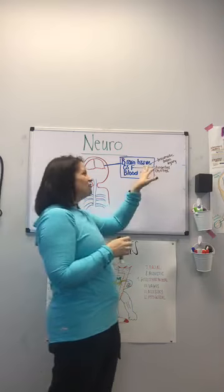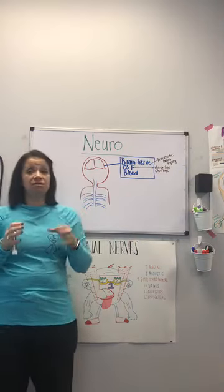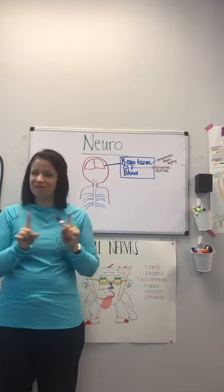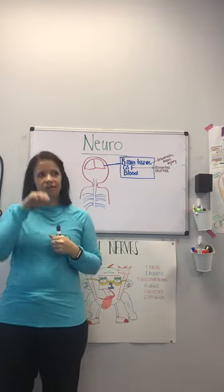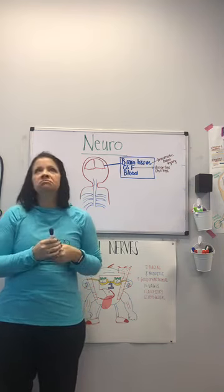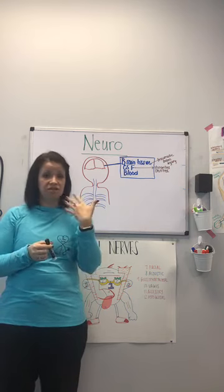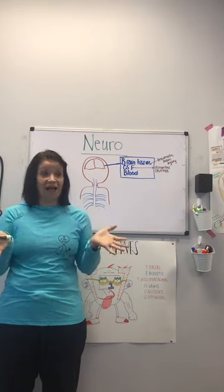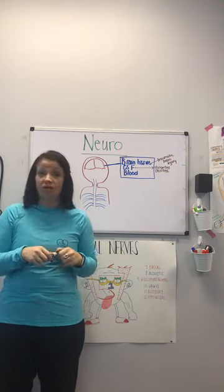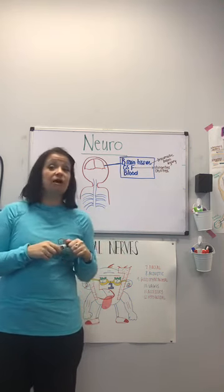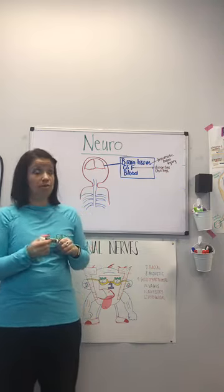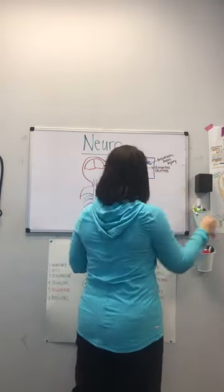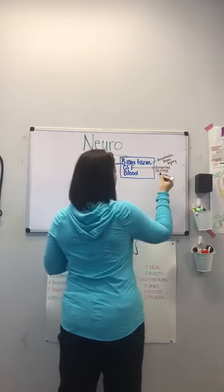So rhinorrhea or otorrhea after a traumatic brain injury is a giant red flag. The patient will also show something called the halo sign — it starts with H. You'll see on the pillow a circle of clear fluid with a little bit of pink. That's blood mixed with CSF leaking out, and it looks like a halo on the pillow.